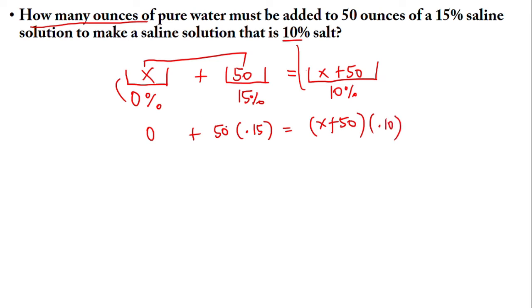Next we simplify. So 50 times 0.15 is 7.5. Next is to distribute this one. Remember it is in a parenthesis so we have to distribute. So x times 0.10 is 0.10x plus 50 times 0.10 is 5. Now we have to just simplify again. We simplify further until we get the value of x.